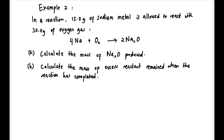Example 2: In a reaction, 15 grams of sodium metal is allowed to react with 30 grams of oxygen gas. The balanced equation is given. Calculate the mass of Na₂O produced, and then calculate the mass of excess reactant remaining when the reaction has completed.